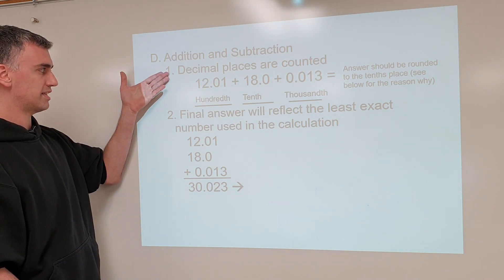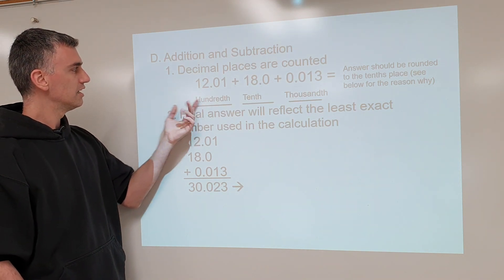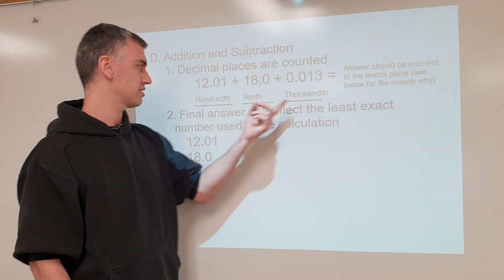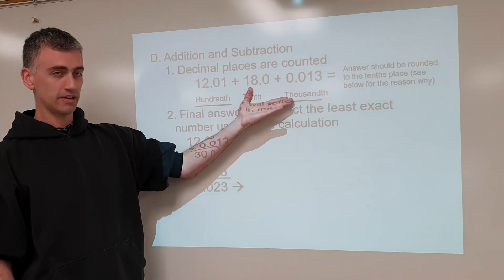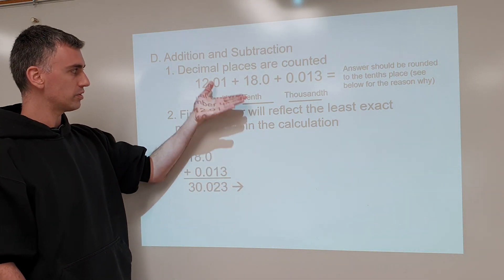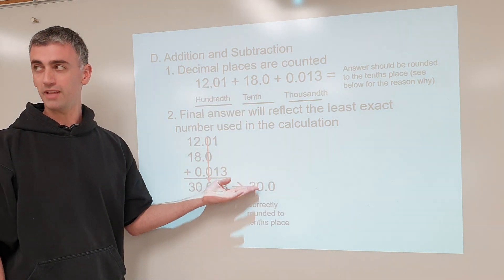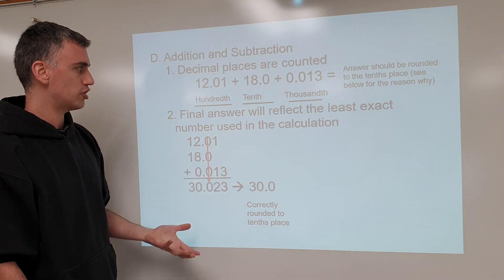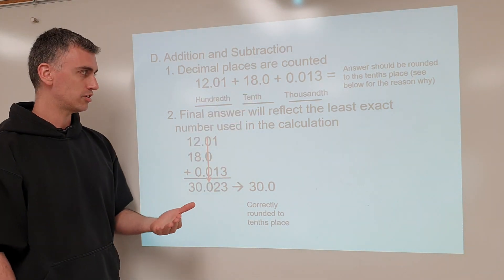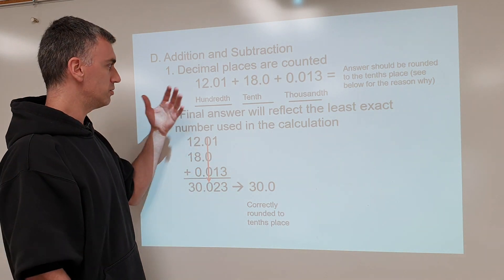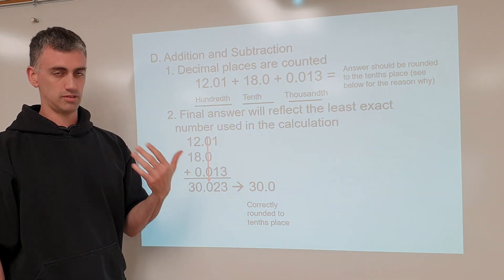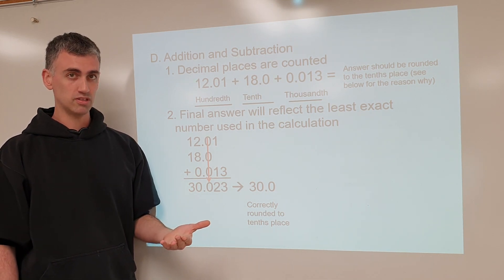Count decimal places. You'll notice this number was measured accurate to the hundredths place, this one to the tenths place, and this one to the thousandths place. The tenths-place number is clearly the least precise. Since your least accurate number only goes out to the tenths place, you need to round to the tenths place to reflect that level of accuracy. You could simply identify hundreds, tens, thousandths and pick the least accurate, but the way to show it on an exam is the stacking method.